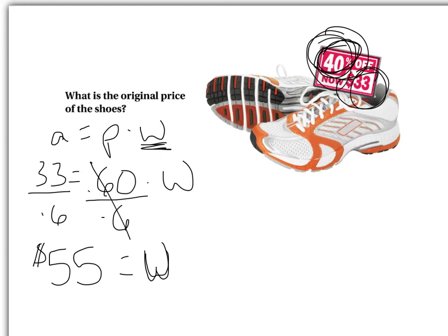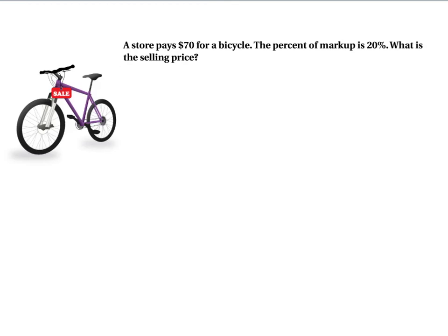Last example I'll do for today here. It says the store pays $70 for a bicycle. The percent markup is 20%. What is the selling price? Again, actually, a couple ways we can do this. Let me show you them. Again, of course, we're sticking with our formula here. Store pays $70 for a bicycle. What's the percent markup of 20? Well, 20% is our percentage. So, .2, .20 doesn't matter. And let's multiply that by the whole and we'll get $70.